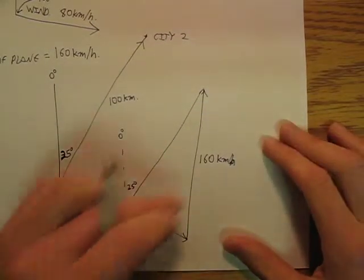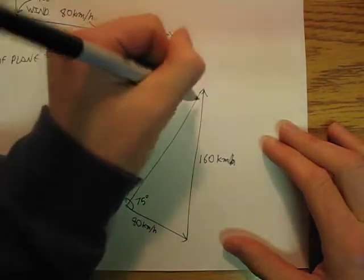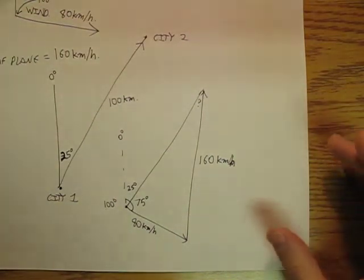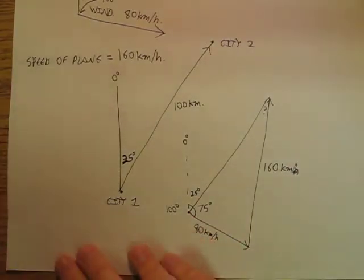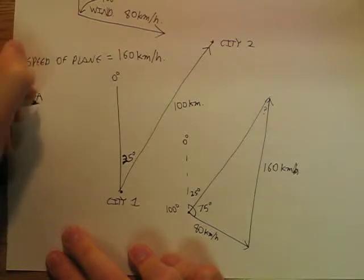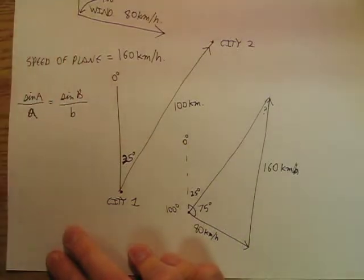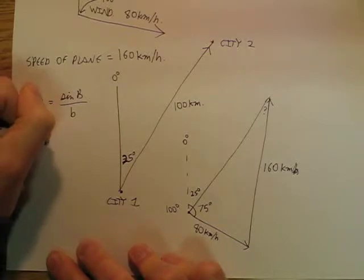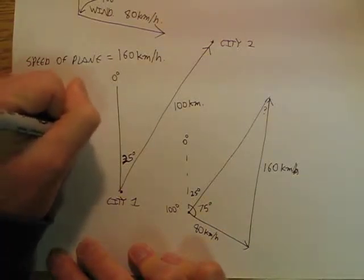Now we can use law of sines to figure out that angle up there. So to figure out this angle up here, I'm going to say sine of A over little a equals sine of big B over little b. And so I'm going to say that A is equal to sine inverse of little a over little b times sine of big B.